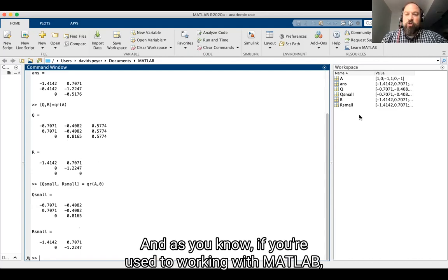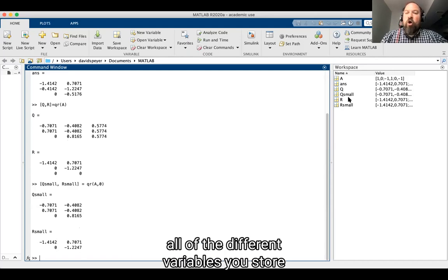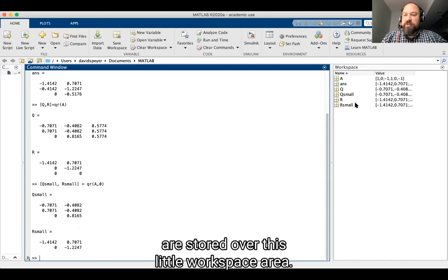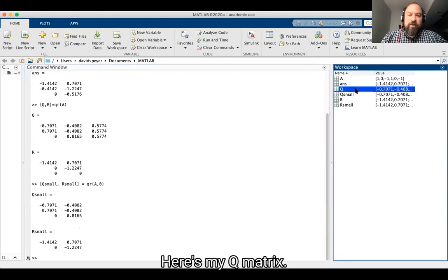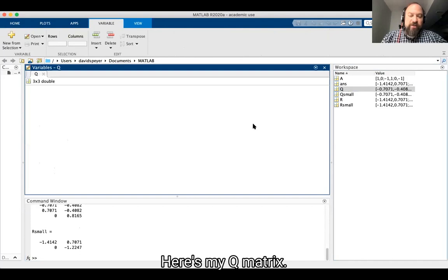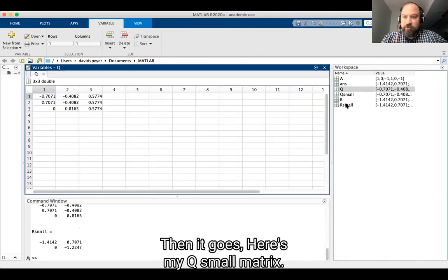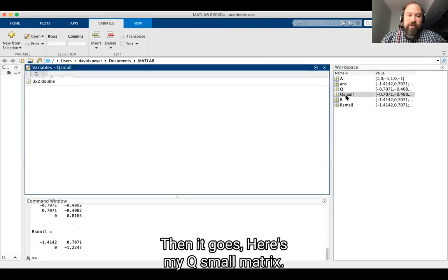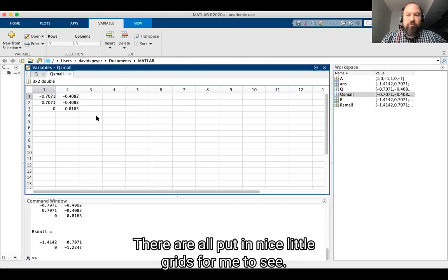And as you know, if you're used to working with MATLAB, all of the different variables you've stored are stored over in this little workspace area. I can click on them. Here's my Q matrix. There it goes. Here's my Q small matrix. They're all putting these nice little grids for me to see.